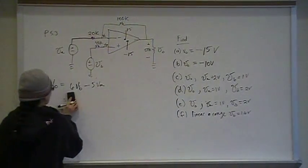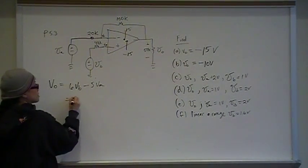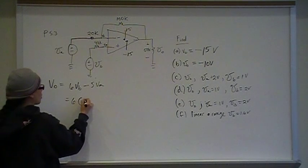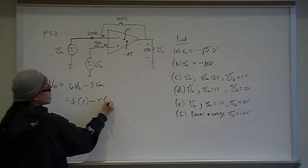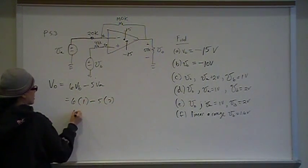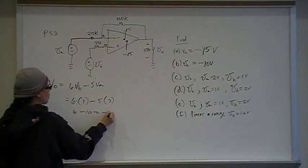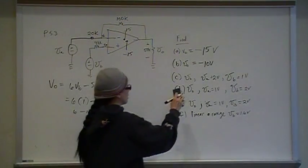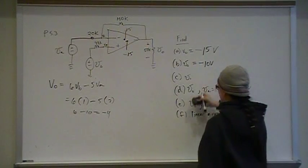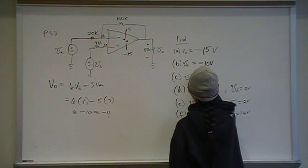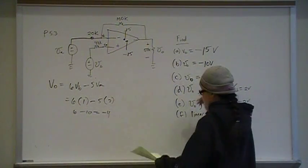Part C is 6 times 1 minus 5 times 2, so that's 6 minus 10 which is negative 4 volts.